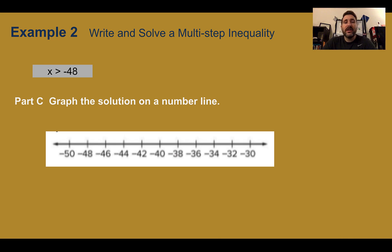Now let's graph that on a number line. So looking at the symbol, it should be an open circle at -48. And if x is greater, the greater numbers are to the right. So my arrow would point to the right.